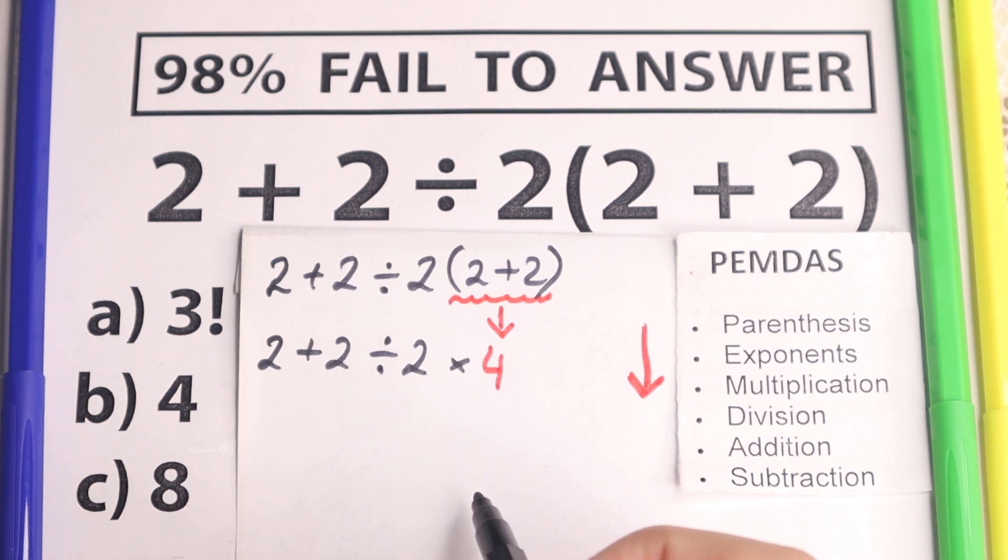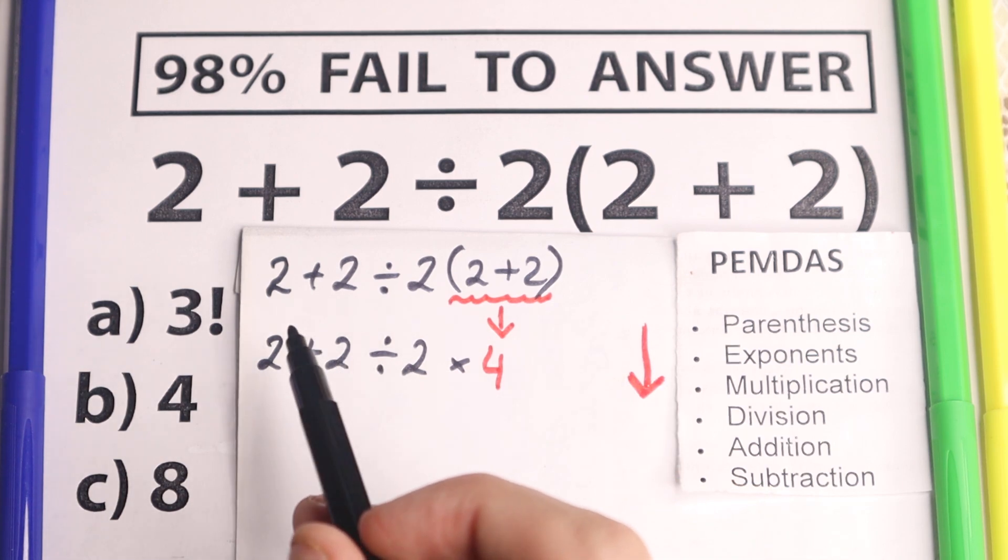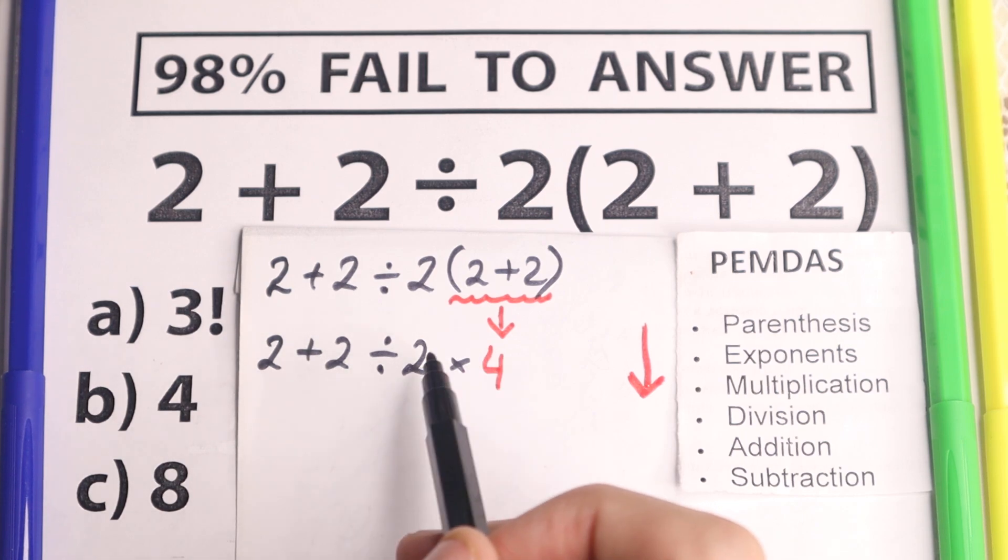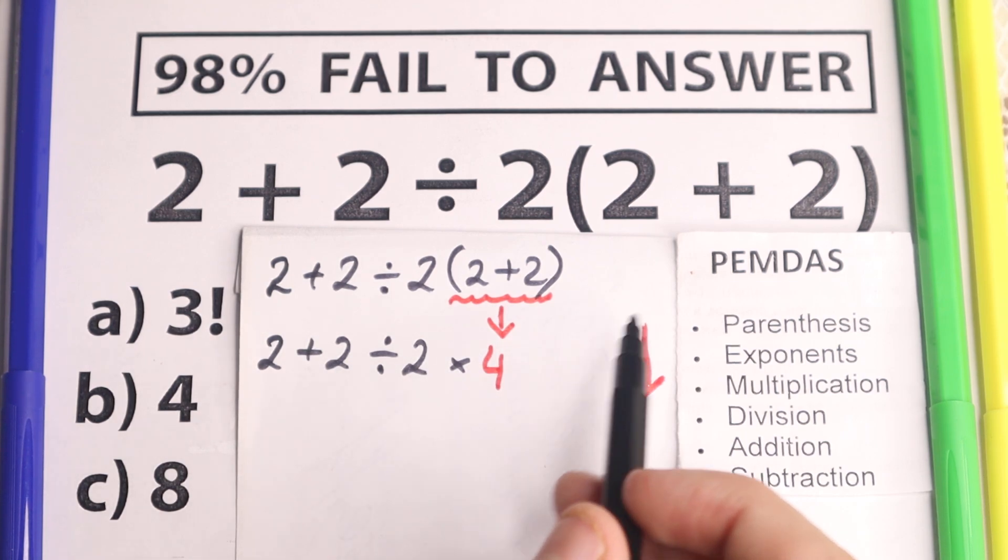The next part according to PEMDAS is exponents. So are there any exponents right here? Let's look at it. Are there any squares? Cubes? Fourth power? Fifth power? No, we don't have any of those. We don't have exponents. So we just skip this part.